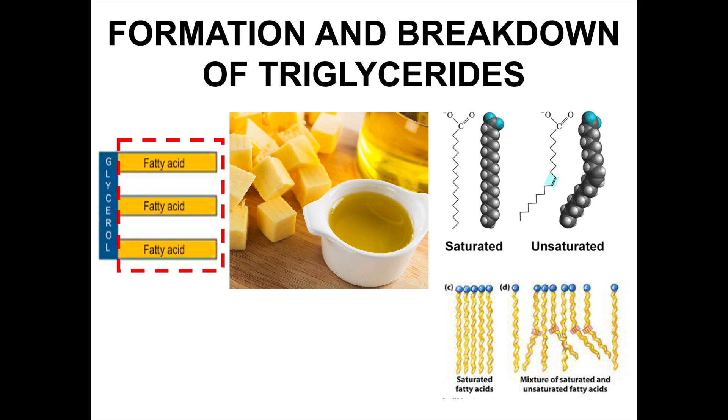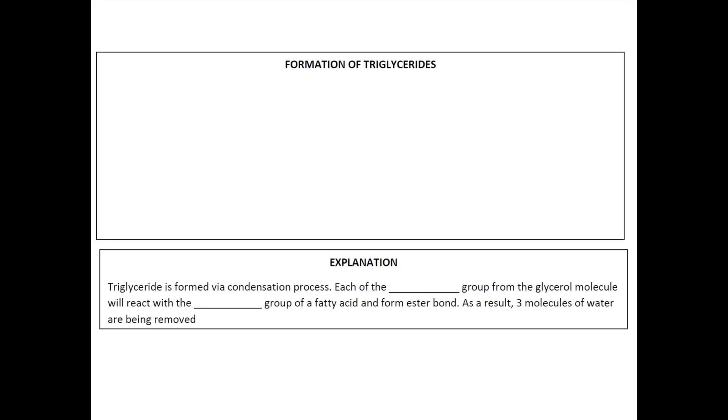When drawing formation of triglycerides, first draw a molecule of glycerol, and then you draw three molecules of fatty acid next to it. We know that fatty acid is made up of carboxyl group at one end and a long hydrocarbon chain at the other end. But there are too many unknowns about the hydrocarbon chain. Therefore, we substitute the hydrocarbon chain with R group. This is how you draw the three fatty acids.